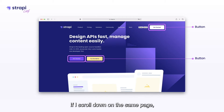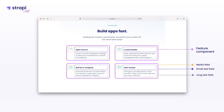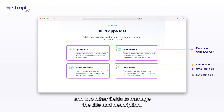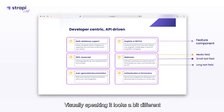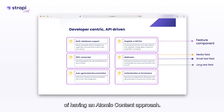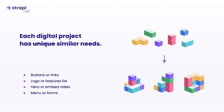If I scroll down on the same page, we can find a more interesting content structure — we call it the feature component. Each feature component has three fields: the media field to manage the icon on the left, and two other fields to manage the title and the description. They all share the same content structure. If I go on another page, we can find again the same feature component. Visually speaking, it looks a bit different, but the content structure is the same. This is the perfect example of having an atomic content approach — we can reuse content components wherever we need them and display them differently.